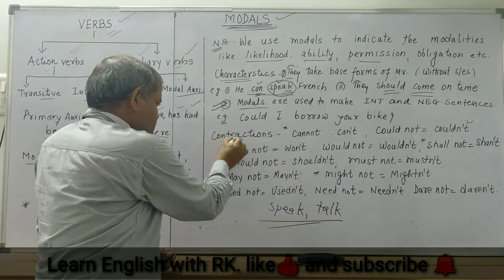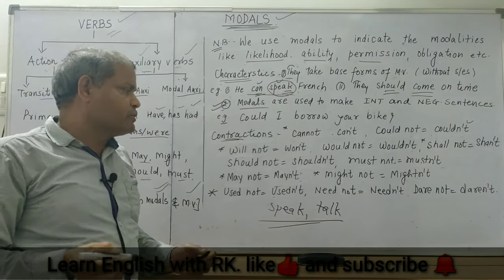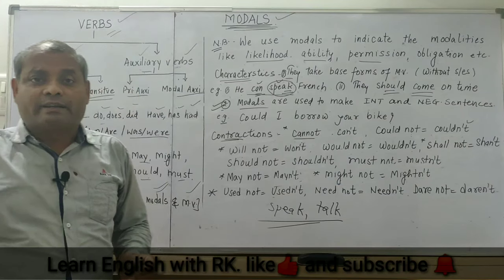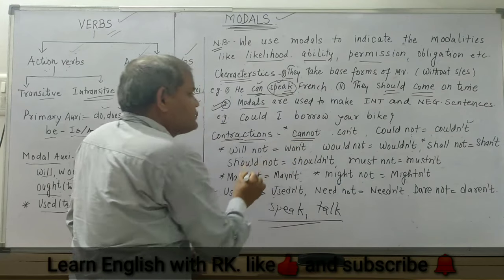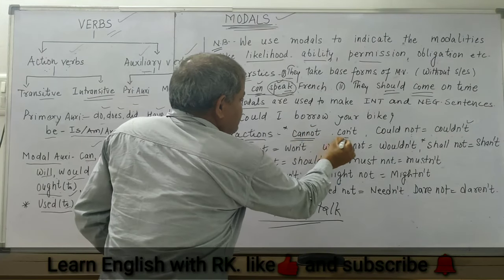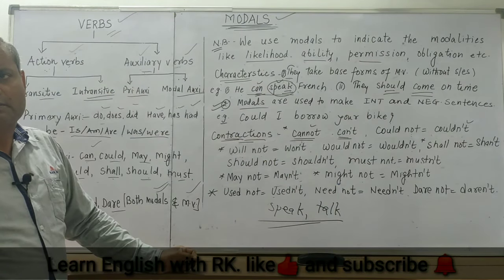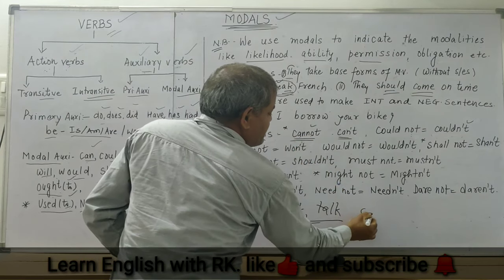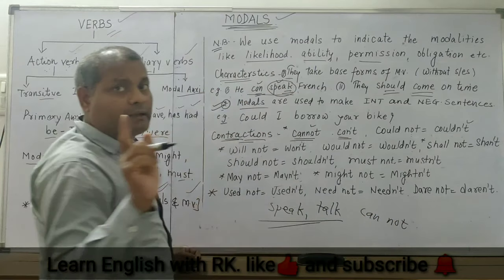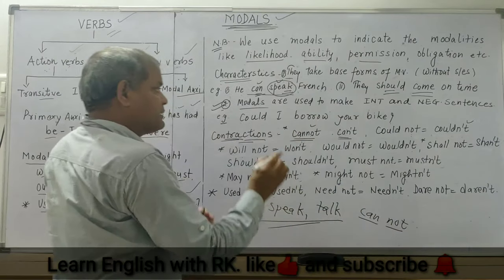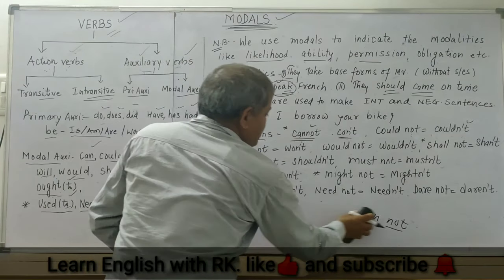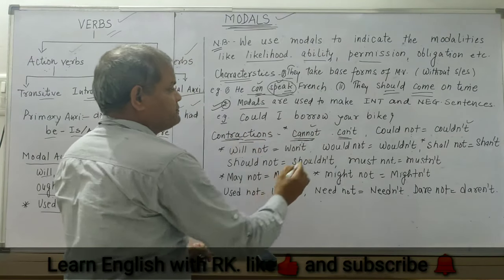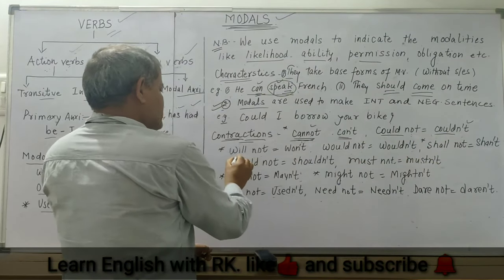Now, short form contractions. If you want to speak English fluently, you need to know the contractions or short forms of the modals with NOT. 'Cannot' is 'can't' — one more thing: never write 'can not' as two separate words. 'Cannot' is always written together. 'Could not' — short form 'couldn't'. 'Will not' — 'won't'.